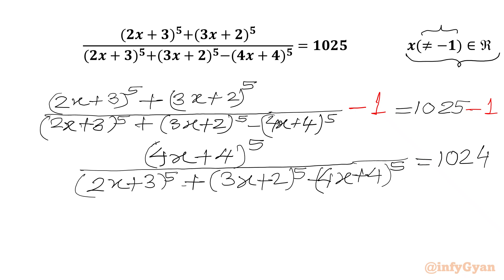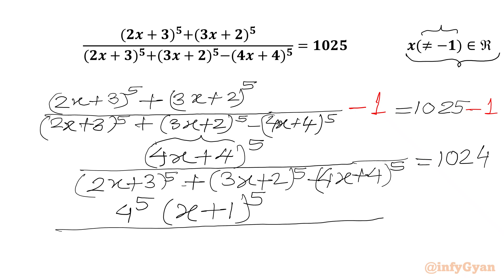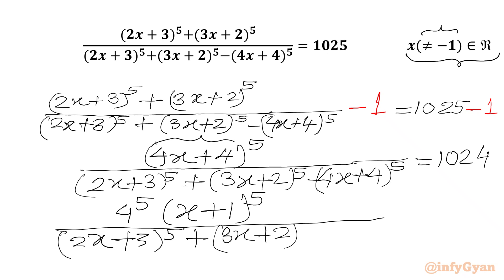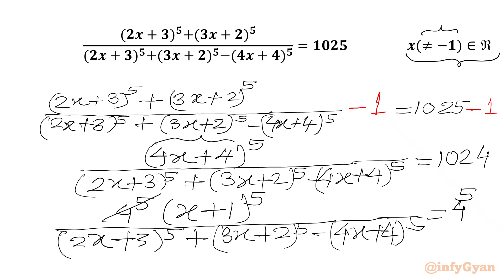Now we will take 4 common from the bracket, so it will come out as 4^5. In the bracket, (x+1)^5 will be there over (2x+3)^5 + (3x+2)^5 - (4x+4)^5, and the right-hand side is 1024, which we can also write as 4^5. Now we can divide both sides by 4^5, so the right-hand side will be 1.